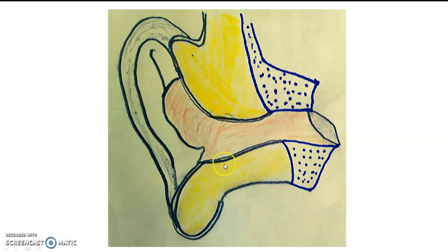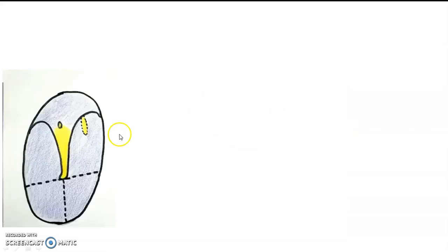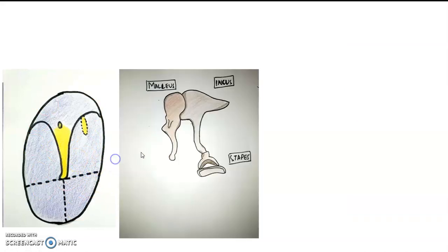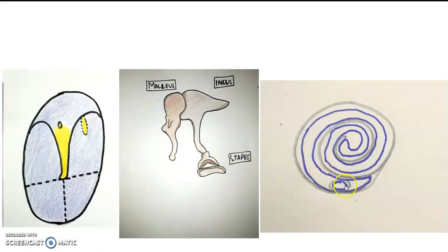During normal hearing, the pinna or auricle gathers sound waves toward the external auditory canal, then sets the tympanic membrane into vibration. This vibrating membrane sets the malleus, incus, and stapes to oscillate like a pendulum of a clock — hence called ossicles. The footplate of the stapes goes in and out of the cochlea, creating a wave in the endolymphatic fluid which sets the organ of Corti into motion.